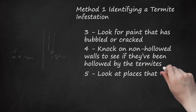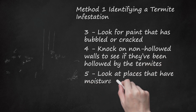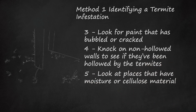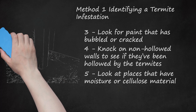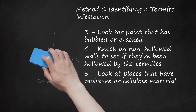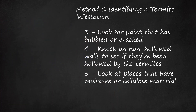Step 5: Look at places that have moisture or cellulose material. Termites are attracted to wet wood, whether it be a part of your house or a wood pile next to your property. These are the most likely places you'll find termites, so examine these areas of your property carefully. Leaking pipes over wood flooring make a perfect breeding ground for termites. Recycle leftover wood after you landscape to prevent your property from attracting termites.